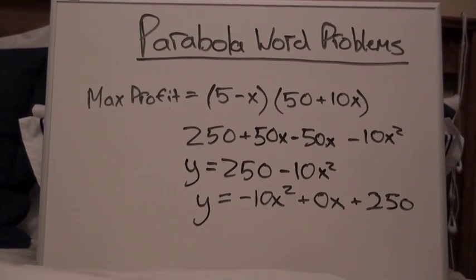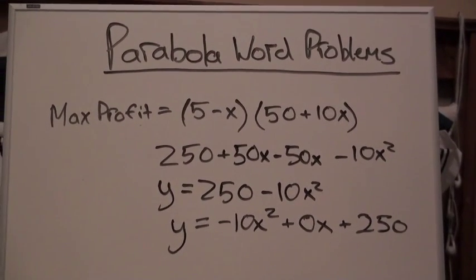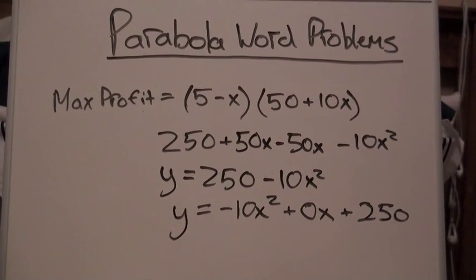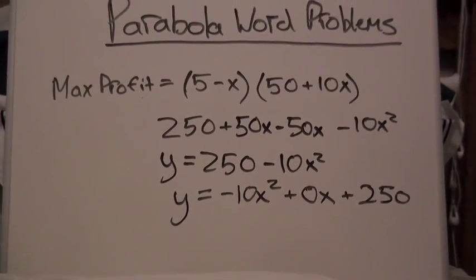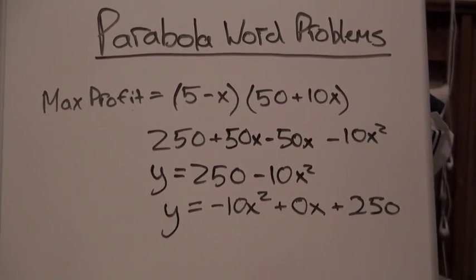Now we find something strange in this problem. This problem is strange because in a normal parabola problem, you need to have an a, b, and c value. Here, we only have an a and a c value and don't have a b value.